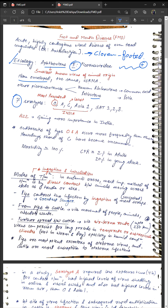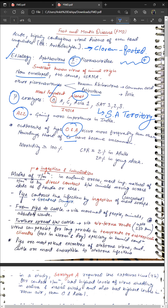There are seven major serotypes of the virus: O, A, C, Asia 1, and SAT 1, 2, and 3. SAT stands for South African Territory, indicating its origin in South Africa. In India, O, A, C, and Asia 1 are prevalent; O is most prevalent and C is least prevalent. Another serotype gaining importance in India is E22. There have been more outbreaks associated with the O and E strain serotypes. In a competitive exam, the answer to 'which serotype is least prevalent in India' was SAT 1.